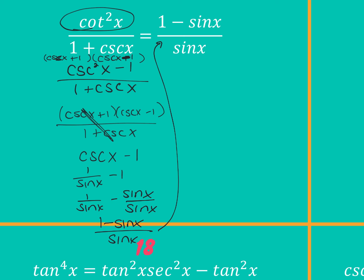The other way would be to work with the right side. Once you get here, set that equal to one minus sine of x, then split the right side: one over sine of x minus sine of x over sine of x, which becomes cosecant x minus one. Remember, there's more than one way to do these — as long as the steps that get you to the right answer are correct, you're good.